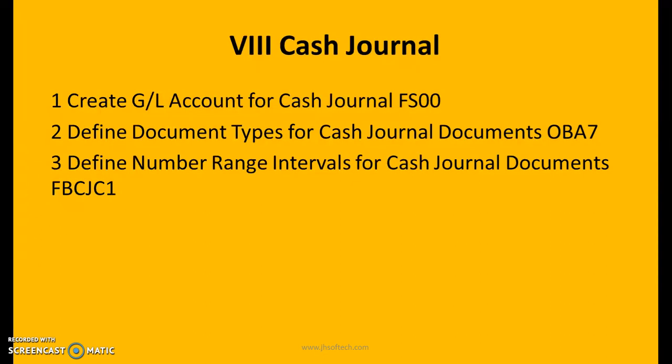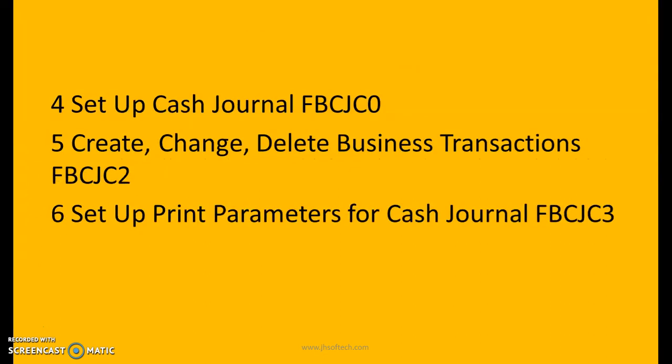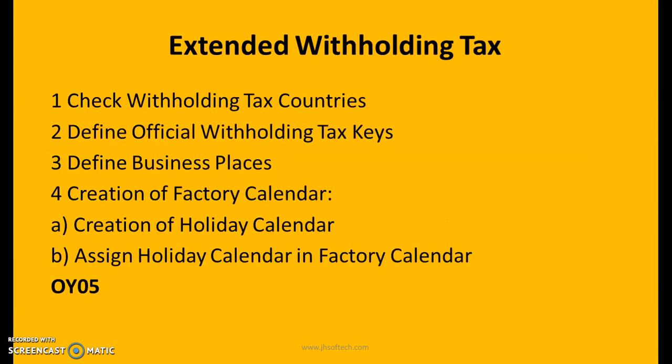Related to the cash journal: create GL account for cash journal — FS00 (remember all GL accounts are by default created in FS00). Define document types for cash journal document — OBA7; define number range intervals for cash journal documents — FBCJC1; set up cash journal — FBCJC0; create, change or delete business transactions — FBCJC2; set up print parameters for cash journal — FBCJC3.